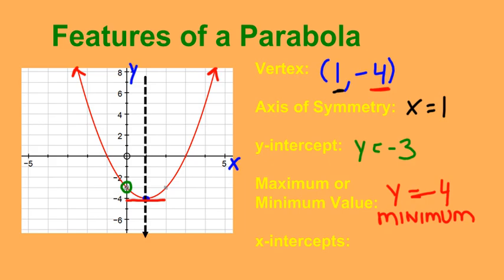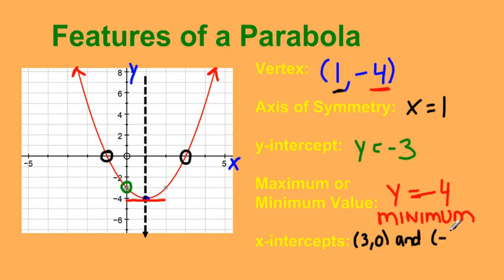Finally, the x-intercepts are where it crosses the x-axis. This parabola crosses at two points. You can write these as coordinates: (3, 0) and (negative 1, 0). Or you can write them as x equals 3 and x equals negative 1. You can ask your teacher which format they prefer. And those are the basic features of a parabola.